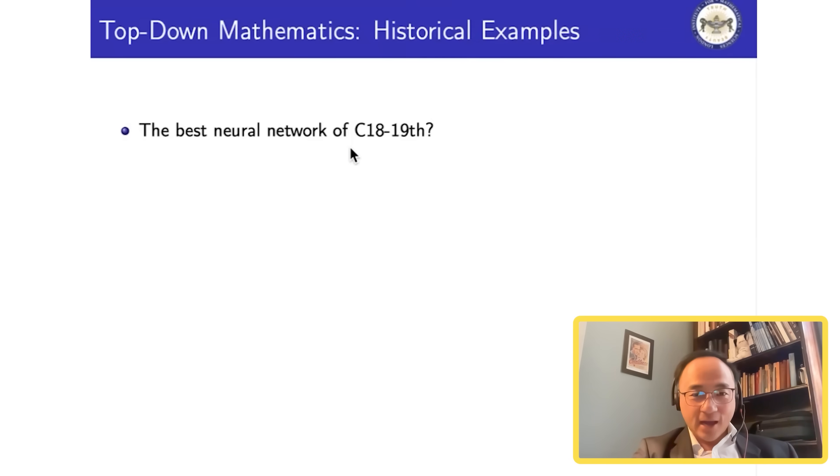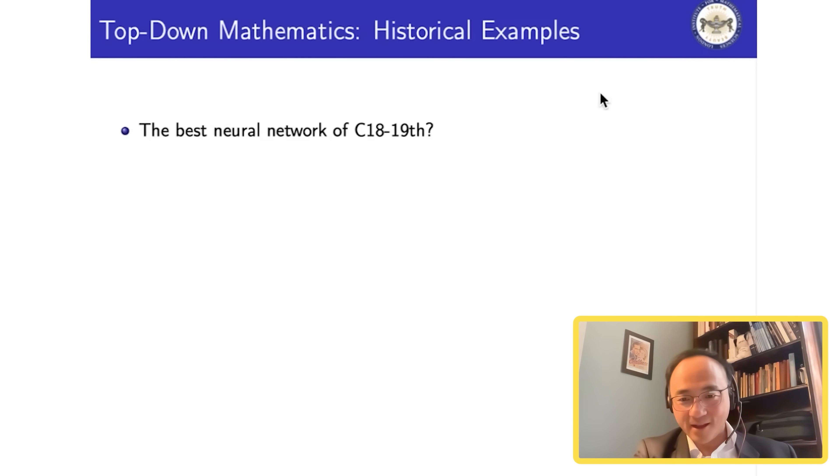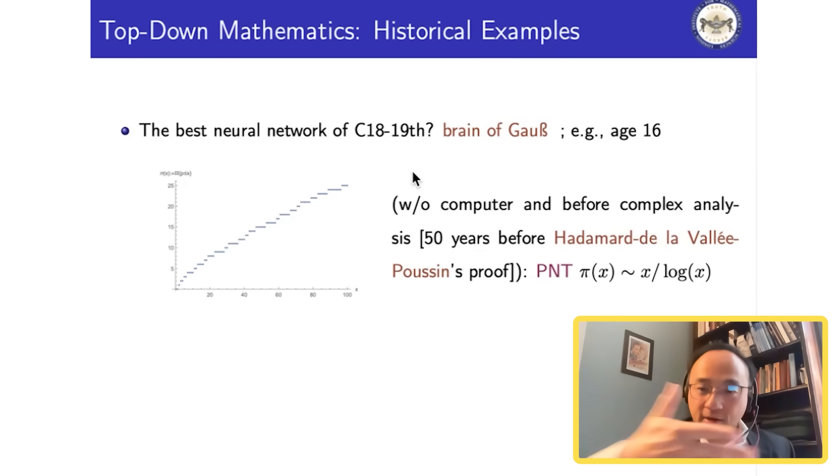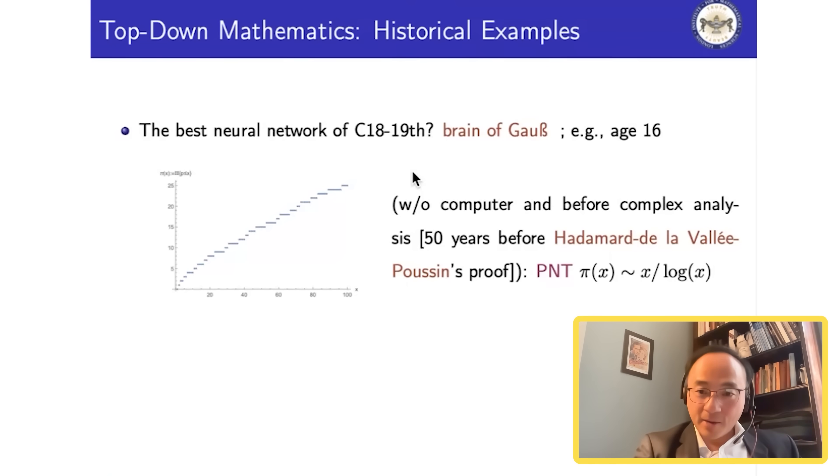The mind of Newton is something like that. Let me move to my next slide. Another mind as great as Newton is Gauss, and I'll give that example in a minute. Speaking of Newton: what is the best neural network of the 18th century? You could argue the 17th century was Newton, and the best neural network of the 18th to 19th century is clearly the brain of Gauss. That's a very good example of top-down intuition-guided mathematics.